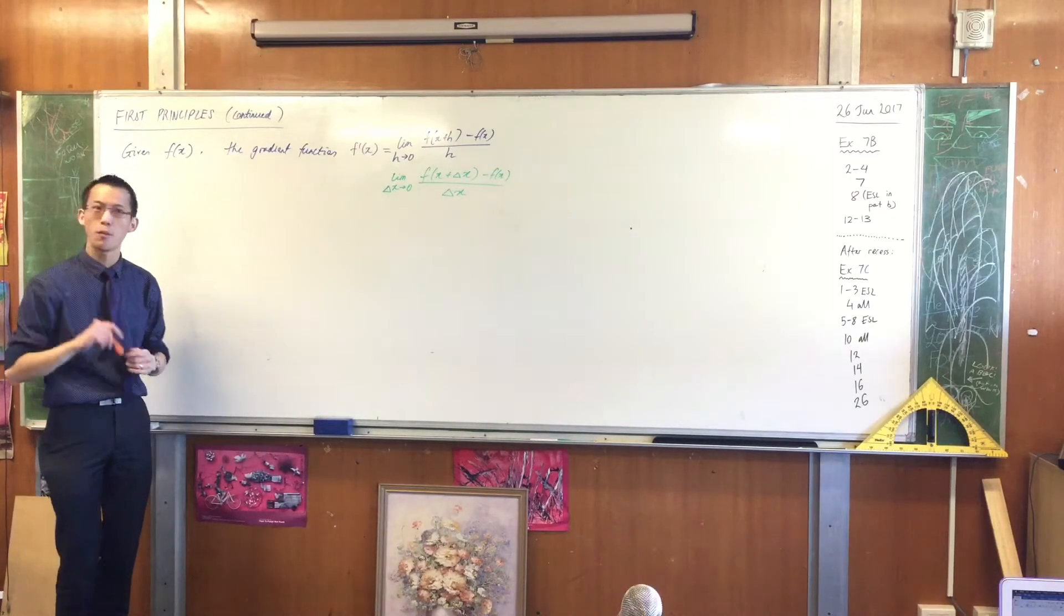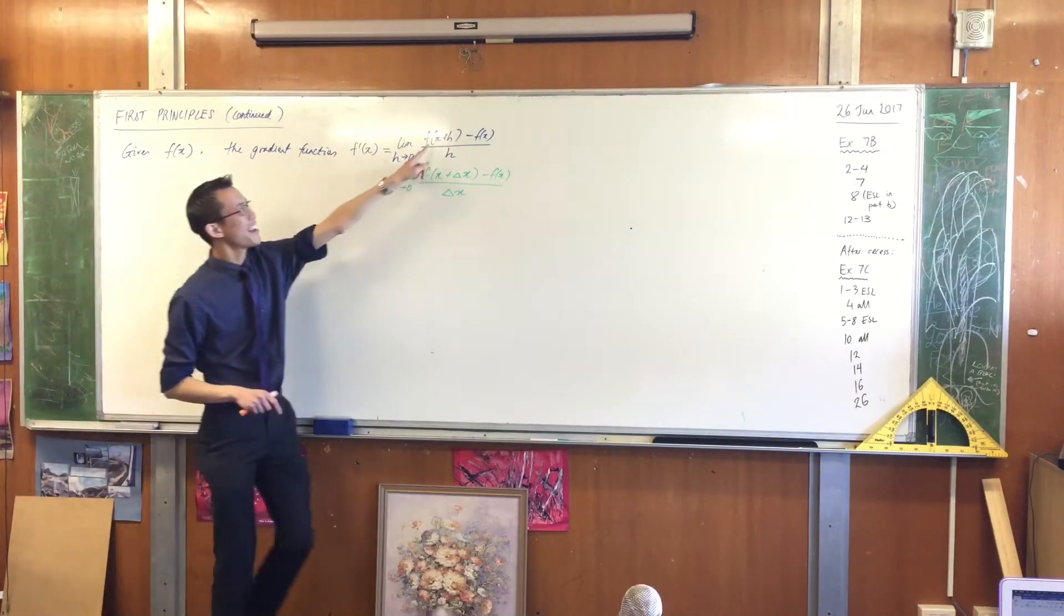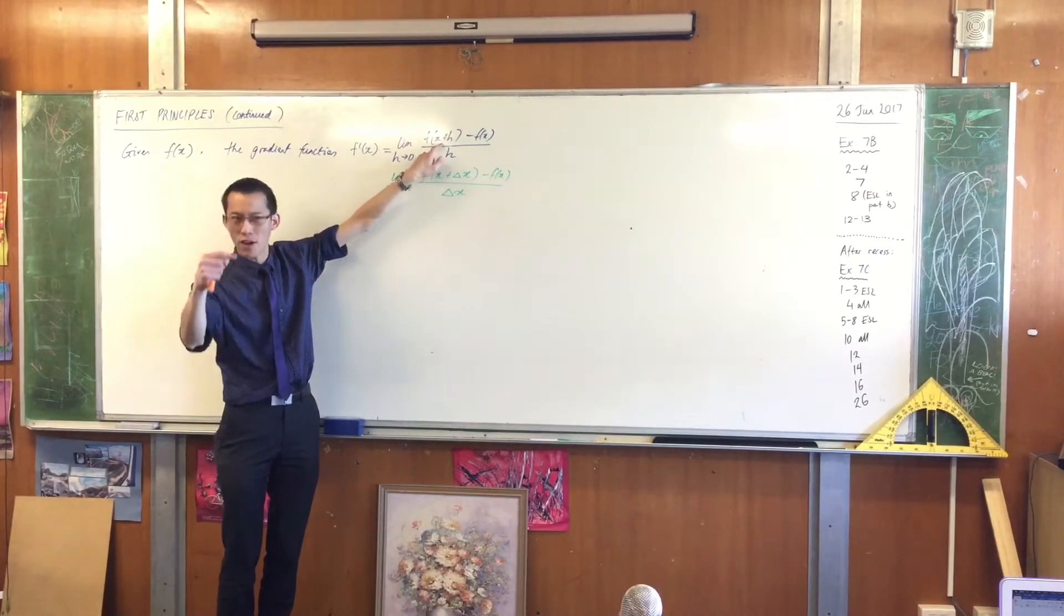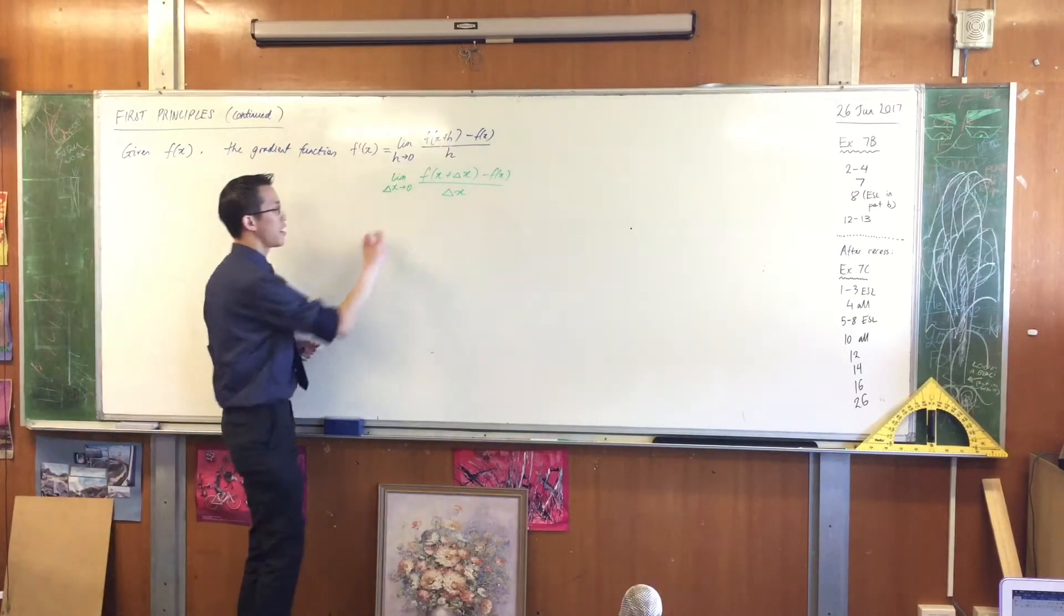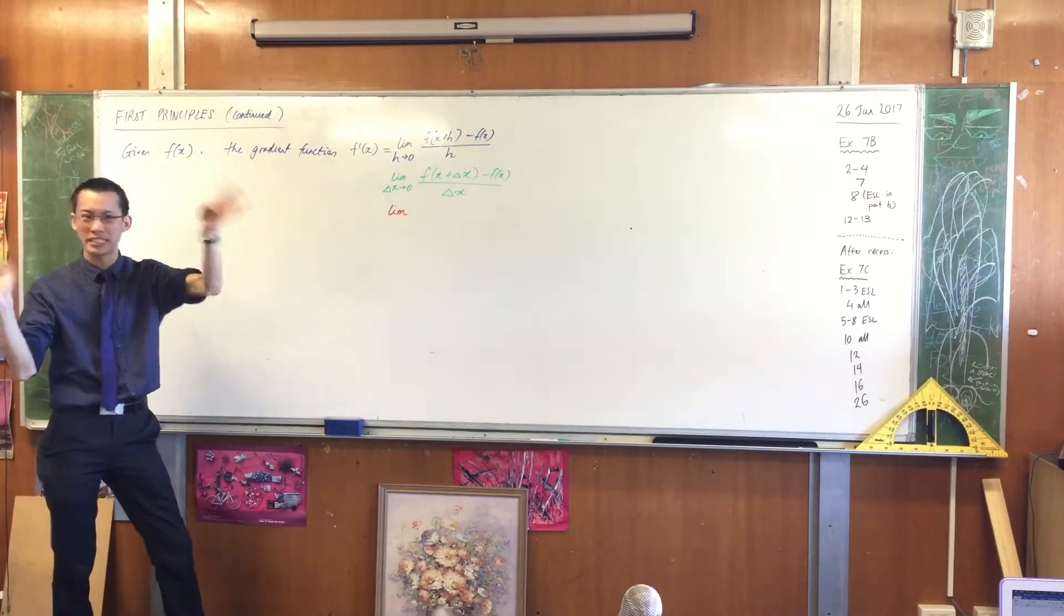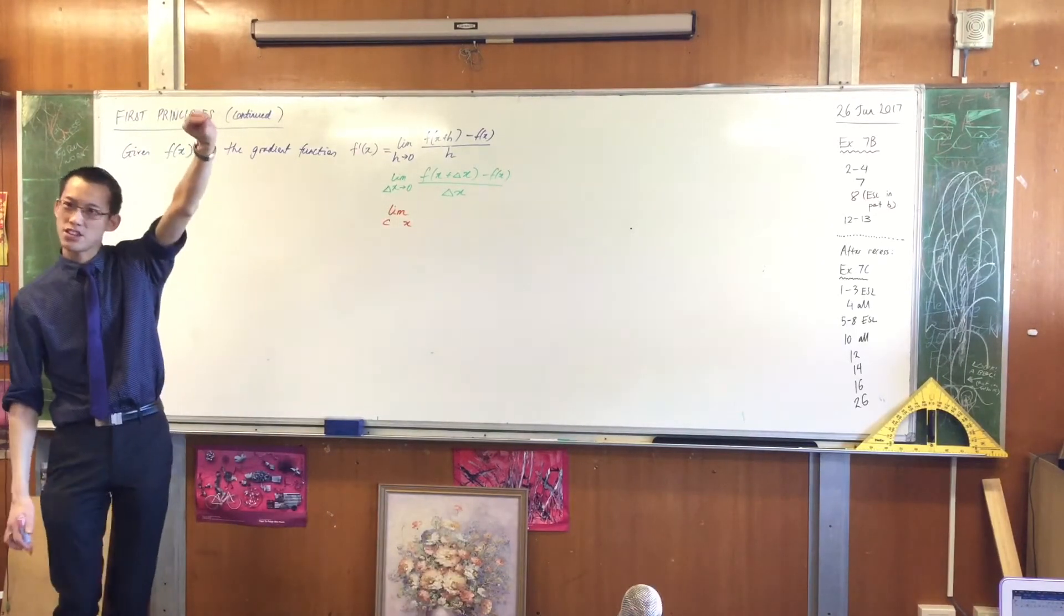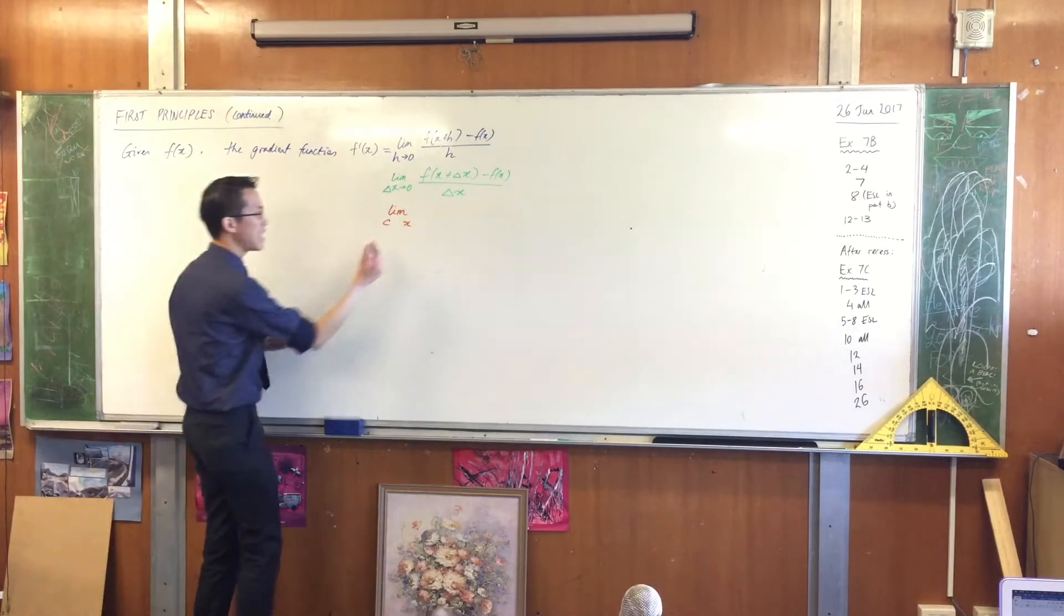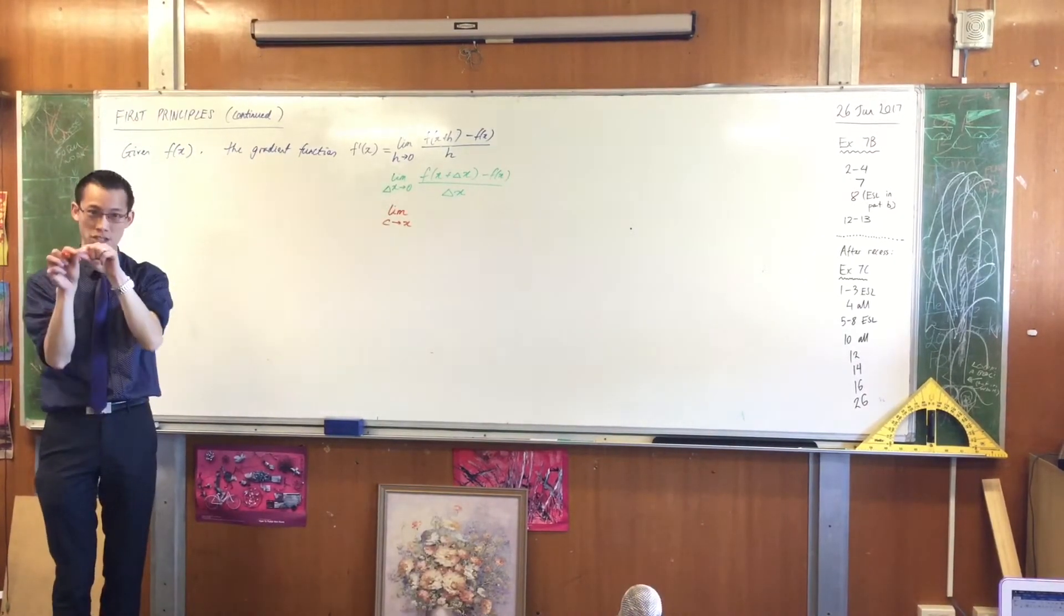There is one more form that I want to show you which is probably more important. We described these two points x and x plus h as the two points on our secant. Well, you can think of another version. What happens if you've got two completely different points? Let's call one of them c and one of them x. You've got one point at the end of your secant, one point at the beginning, and what you really want is to bring them close together. So as c approaches x, you go from a secant to a tangent.